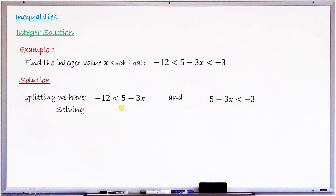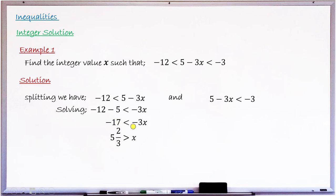Solving the first inequality, I take the 5 to the left to get minus 2 minus 5 less than minus 3x, giving minus 17 less than minus 3x. Dividing both sides by negative 3, the inequality sign reverses from less than to greater than, giving 5 and 2 over 3 less than x, meaning x is greater than 5 and 2 over 3.